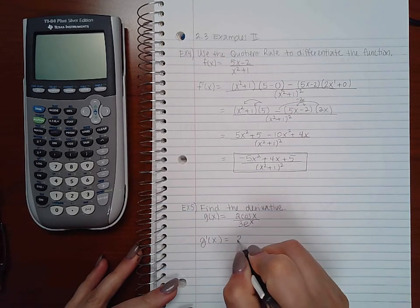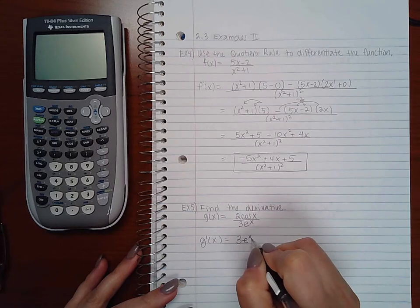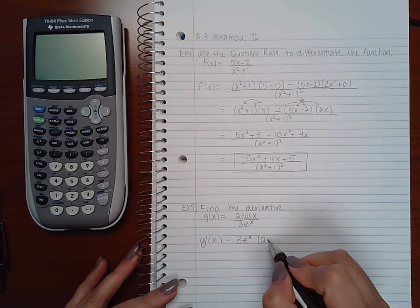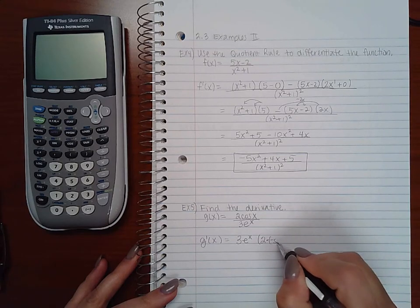So I'm going to start with low, d high. There's a constant multiplier there. But the derivative of cosine is negative sine.